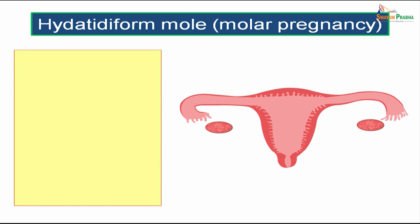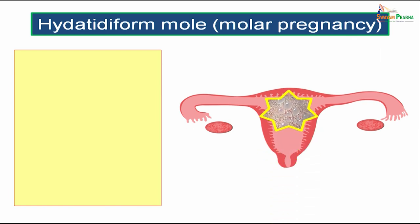Have you heard about a term known as hydatidiform mole, otherwise known as molar pregnancy? If you look inside the uterine cavity, you will see many vesicles filled with fluid, and this is known as molar pregnancy or hydatidiform mole. This is actually considered a gestational trophoblastic disease.